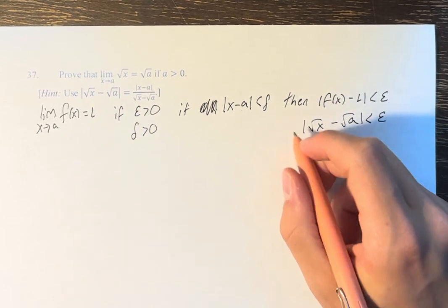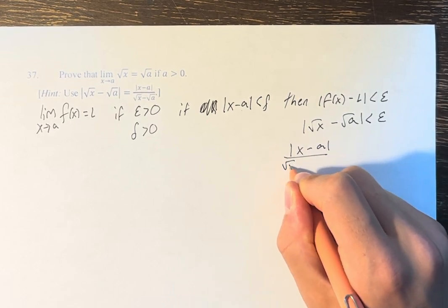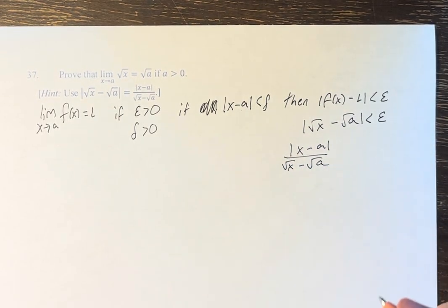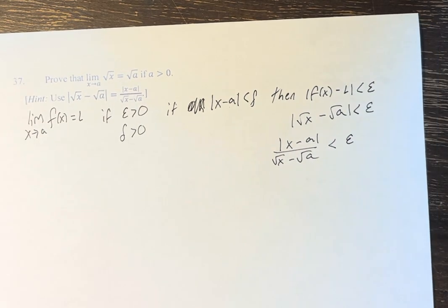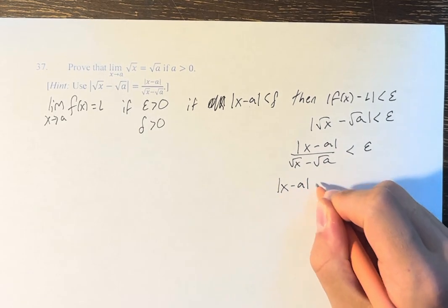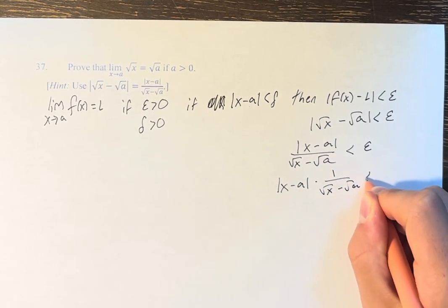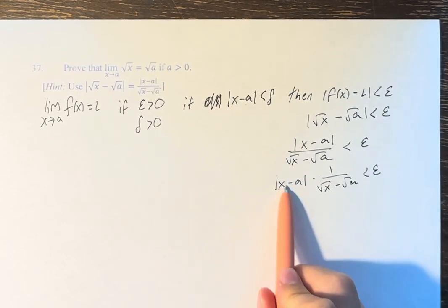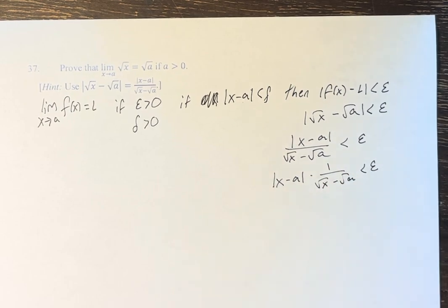We use the fact that |√x - √a| equals |x - a| over (√x + √a), and therefore that expression is less than epsilon. So we have the absolute value of x minus a times 1 over (√x + √a) is less than epsilon. We have |x - a| less than delta, but we have this extra factor attached.